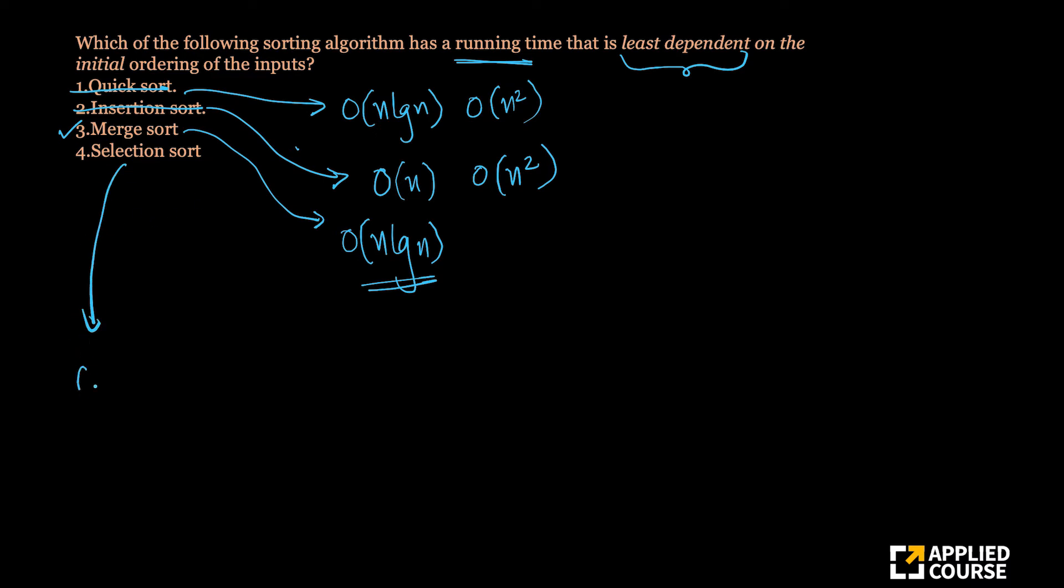Selection sort also, the time complexity is order of n square. But there is a subtle detail here, which is for selection sort, you have order of n square comparisons and order of n swaps.